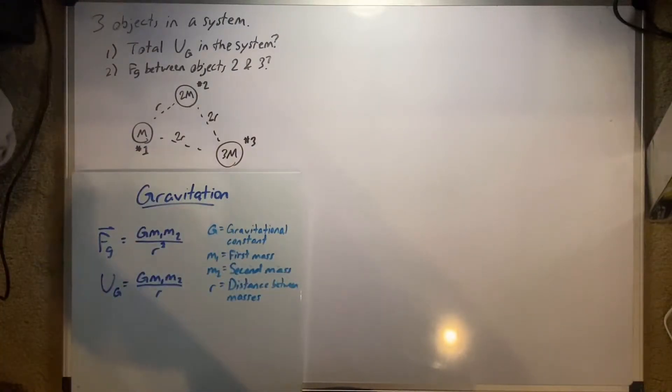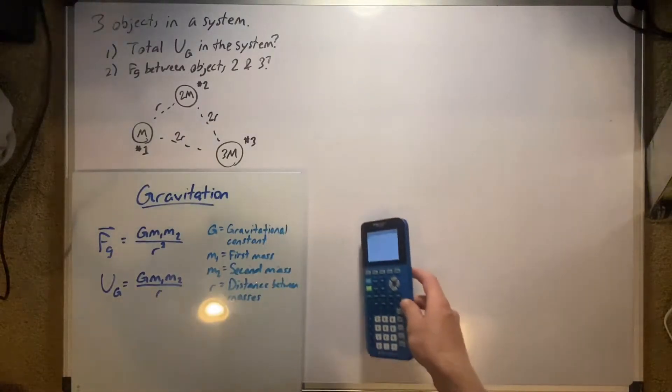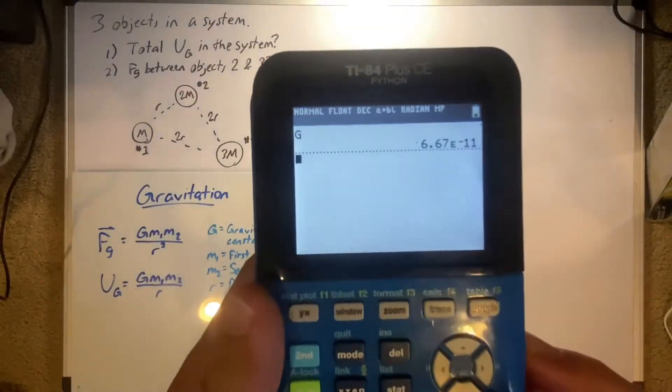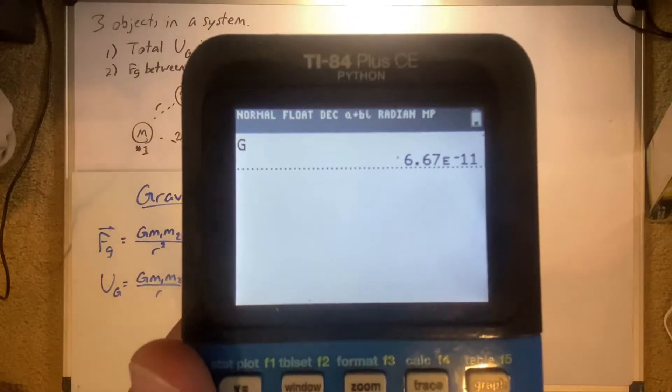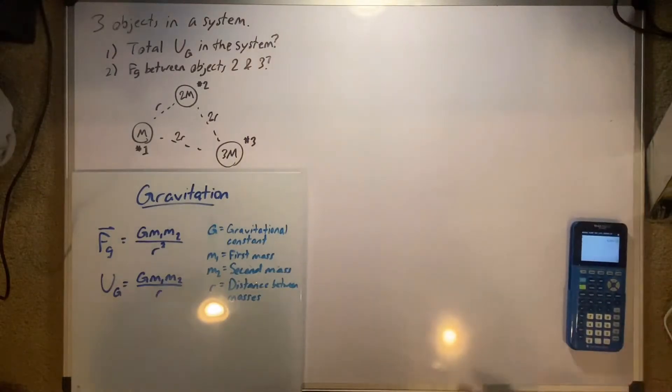I actually have it on my calculator over here. It's a very small number. 6.67e to the negative 11th, so that's 6.67 times 10 to the negative 11th power. And to show that it's just a huge string of zeros after that decimal spot. So we normally leave these in G's. So how exactly would we go about solving this first problem?